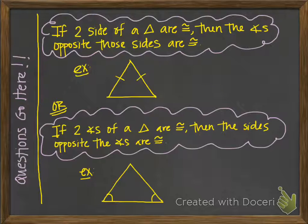There are four theorems in this section and one definition that you can use in proofs. The first two theorems are on this page and they are converses of each other — a converse and a conditional — so they are just switching the beginning and ending part of the if-then statements.